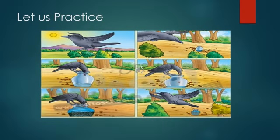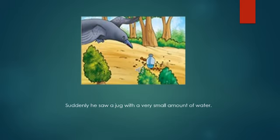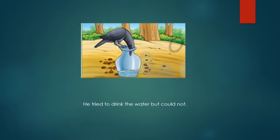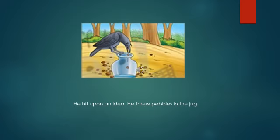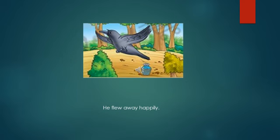My dear students, now I will show you how to write a good picture-based story following its basic structure and procedure. After completing the initial procedure, we have given the title 'Thirsty Crow' to our story. Introduction: Once, on a hot day in summer, a crow was flying here and there in search of water. Suddenly, he saw a jug with a very small amount of water. He tried to drink the water but could not. He hit upon an idea. He threw pebbles into the jug. The water rose up. He drank it and flew away happily. At this point you may write the moral of your story, though it is not an essential part of a picture-based story.